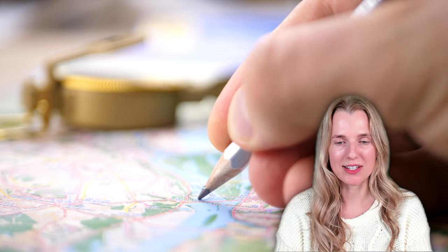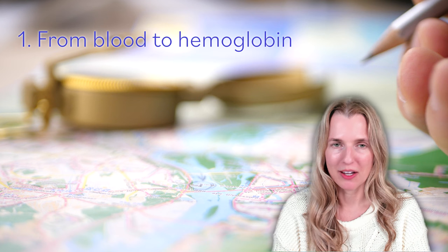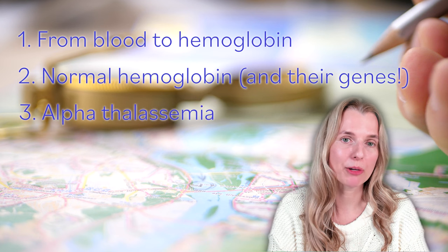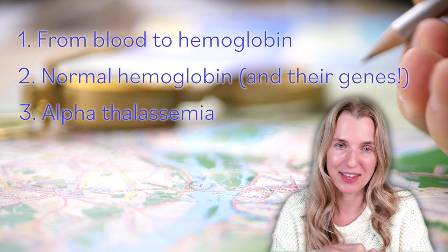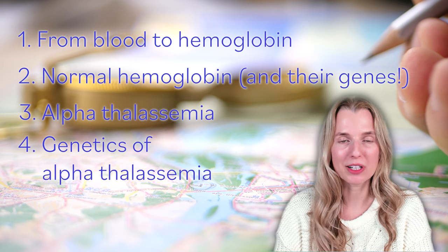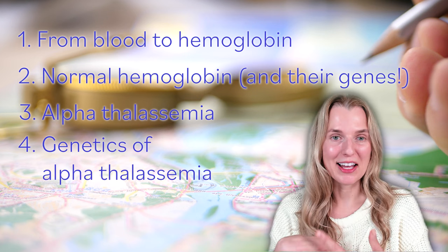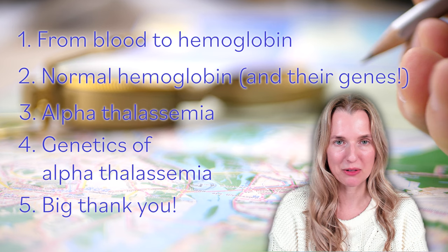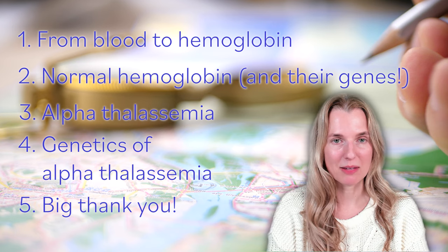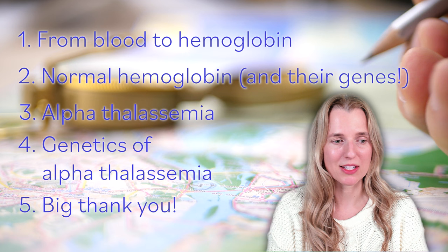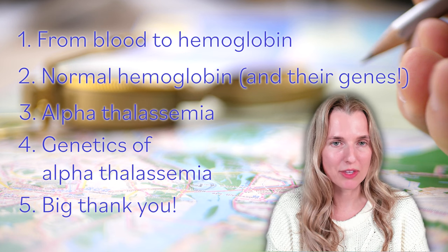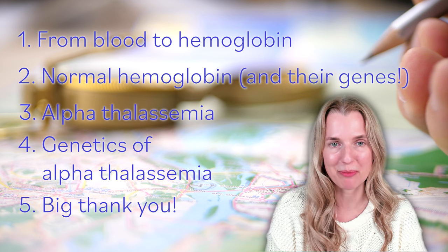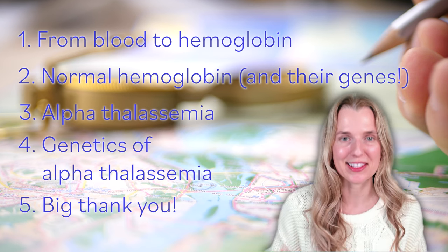So part one is going to take us from blood to hemoglobin. Part two is going to be normal hemoglobin. Part three is when we have a problem with hemoglobin. And that's where we talk about alpha thalassemia. Part four, we're going to talk about the genetics of alpha thalassemia. And part five is going to be my acknowledgements. Because every time I create something or make it, it's not just me. And sometimes it's someone close to me, or sometimes it's someone from TikTok who teaches me something or inspires me to make a video. So sometimes the acknowledgements are anonymous, but I do like to acknowledge the people that make all of these videos possible. So let's get started.